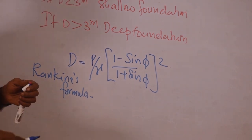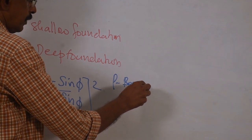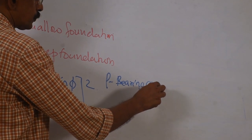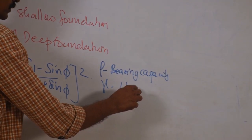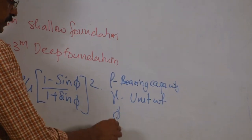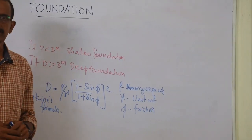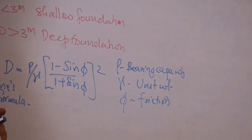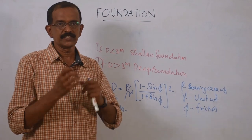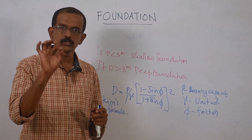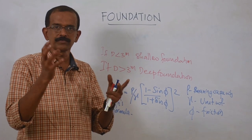What is P, what is gamma, what is phi? P is the bearing capacity of the soil. Bearing capacity is the ability of the soil to take care of the weight or load of the structure.